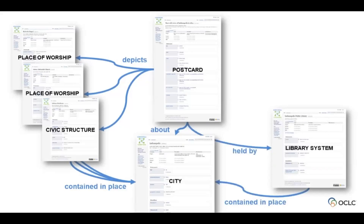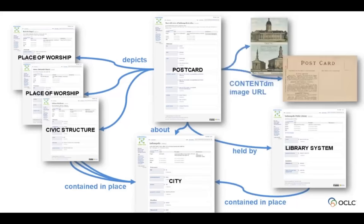You can also say that the places depicted in the postcard are themselves contained within that city that the postcard is about. You can also connect the item to the holding institution — for example, this postcard is held by the Indianapolis Public Library, which is contained in Indianapolis. And most importantly for the item itself, this postcard has digital representations: an image at the front as well as the image at the back. That's the environment we're looking to build throughout this project.